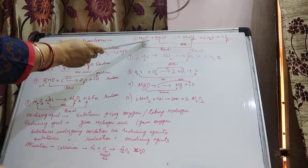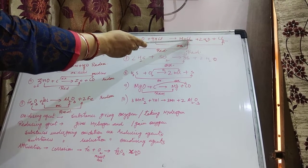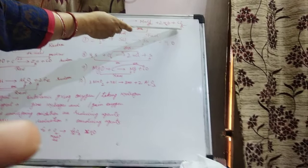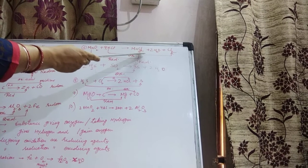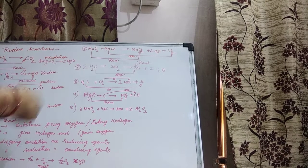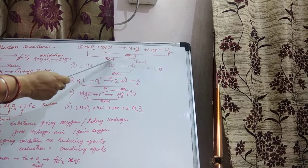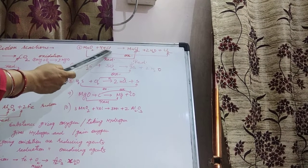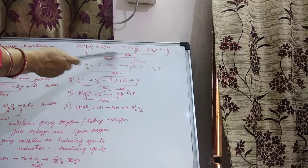Next example: MnO₂ plus Hydrochloric Acid gives MnCl₂, Water, and Cl₂ gas. MnO₂ is converted into MnCl₂ — Oxygen is getting removed — so that is Reduction. HCl is converted into Cl₂ — Hydrogen is getting removed — and removal of Hydrogen is called Oxidation. So this is again a Redox reaction.